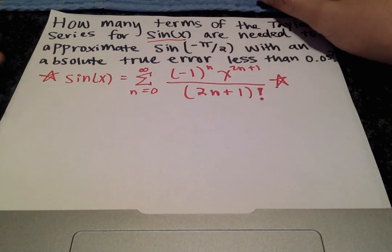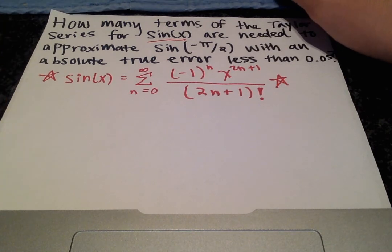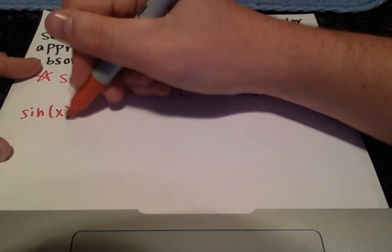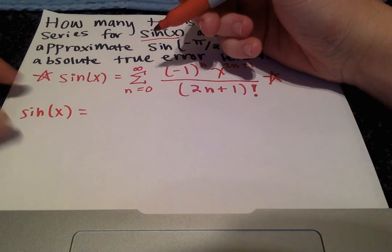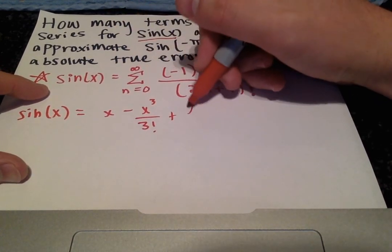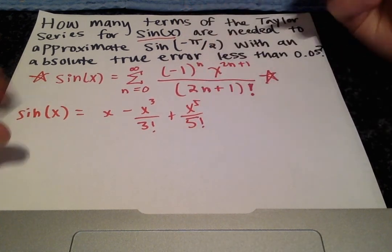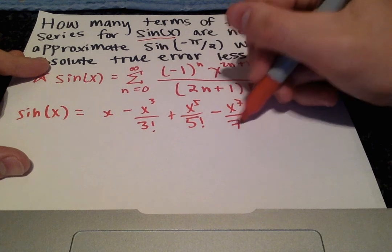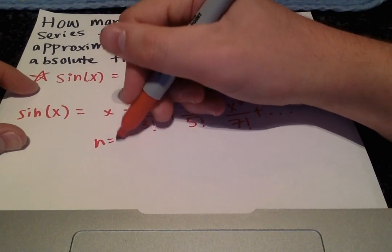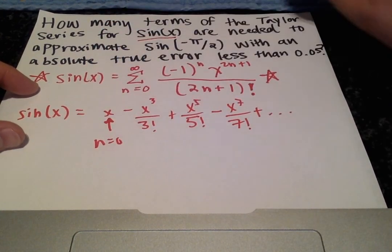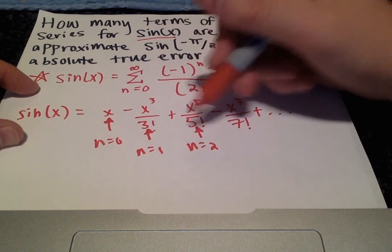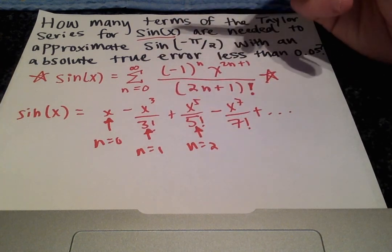For sine of x, you can use the formula or if you've memorized it that's great. The Taylor series expansion of sine of x is: x minus x cubed over 3 factorial plus x to the 5th over 5 factorial minus x to the 7th over 7 factorial, and so on. The first term is n equals 0, then n equals 1, n equals 2, and you keep plugging in n values to get each successive term.